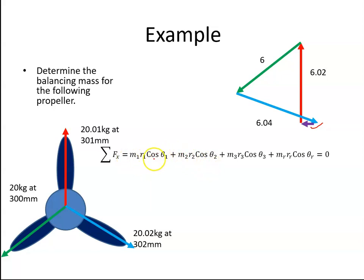If I just take the forces in the horizontal axis: M1 R1 cosine theta 1, these values here, plus M2 R2 cosine theta 2, those values here, plus M3 R3 cosine theta 3, those values there.